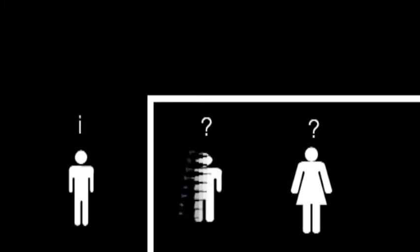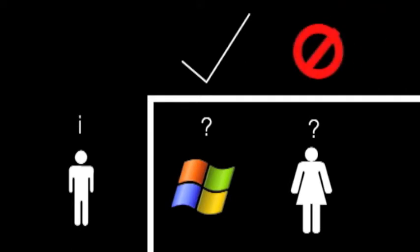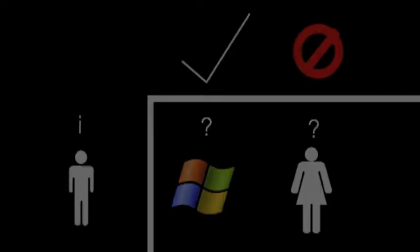Alan then asked the question, what would happen if a machine were to take the part of the man or the woman? Will the interrogator be able to distinguish which is the computer and which is the human? This game later on came to be known as the Turing Test, and is a turning point in the definition of artificial intelligence.